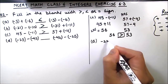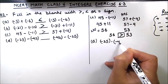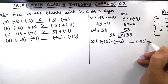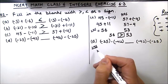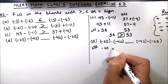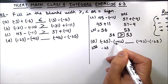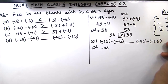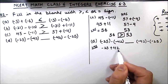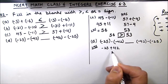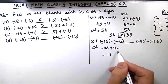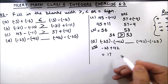Part D is (-25) - (-42) blank (-42) - (-25). First we solve the left hand side: -25 we write as is. Minus and minus gives a positive sign, so we have -25 + 42. Minus and plus means we subtract: 42 minus 25 is 17. The sign is of the bigger number, which is +42, so the left hand side is +17.